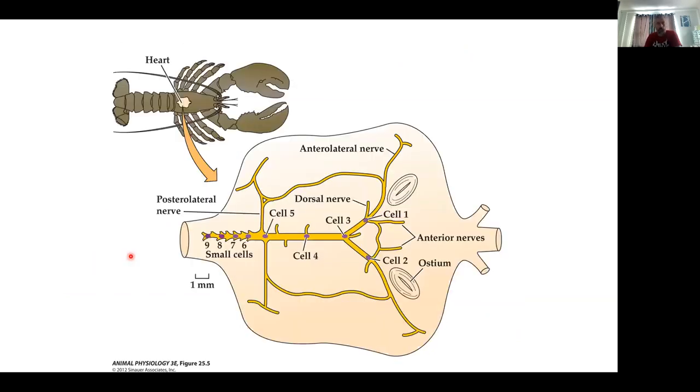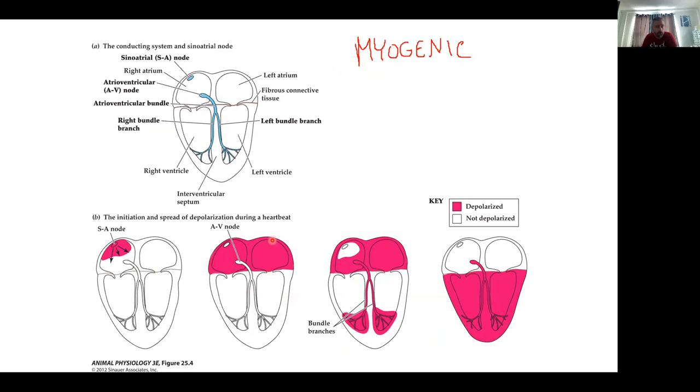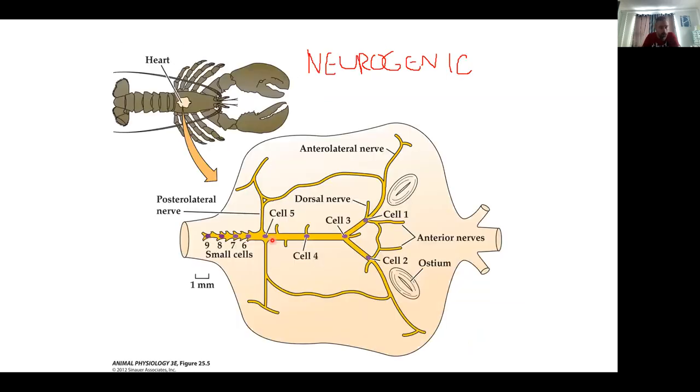Hearts themselves come in different varieties. One way we can think about how hearts differ is the actual means of generating the contraction, of generating the pressure wave. The hearts that we're familiar with, the ones that you and I and other vertebrates have, are called myogenic hearts. The reason we call it myogenic is that the electrical signal that stimulates contraction comes from the heart muscle itself.